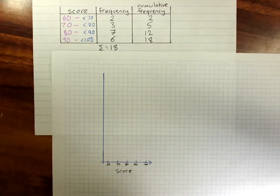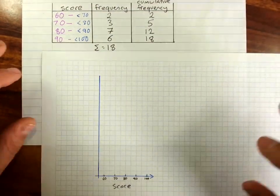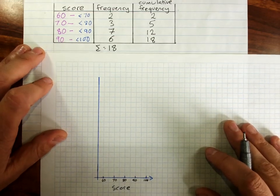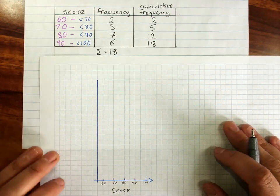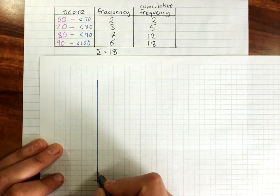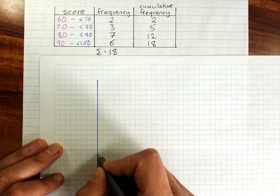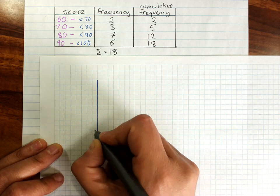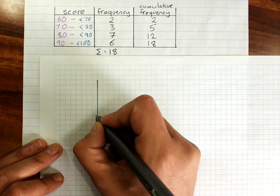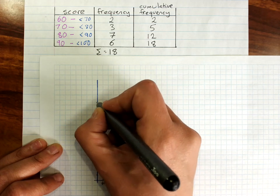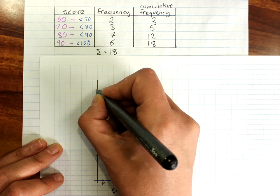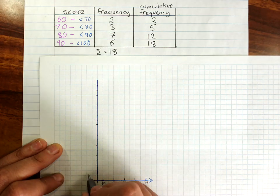I'm going to zoom in a little bit for us there. Up the side, we have the cumulative frequency, and that needs to go up to 18, as I said. So carefully putting your gradations on the grid lines, making sure they're evenly spaced.